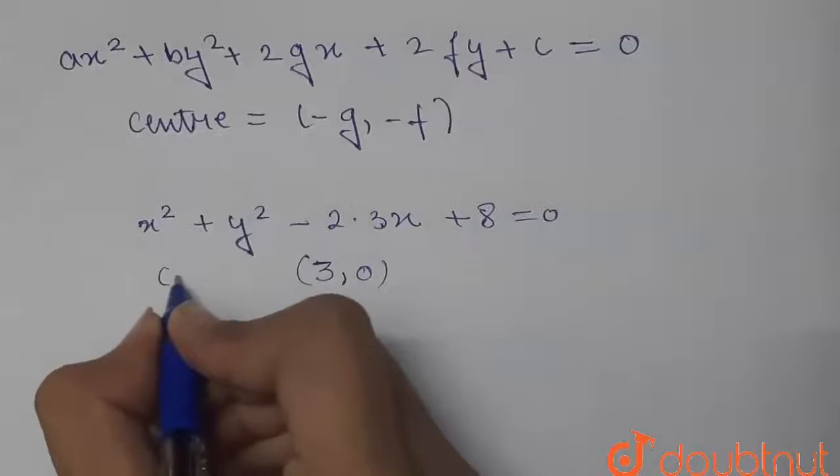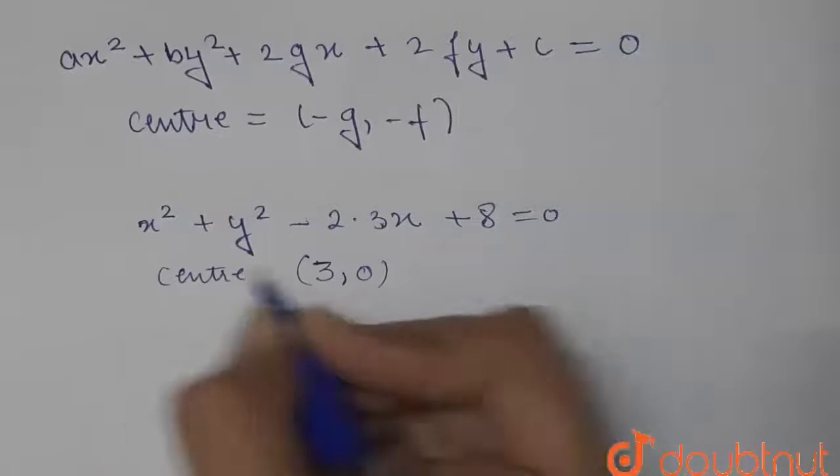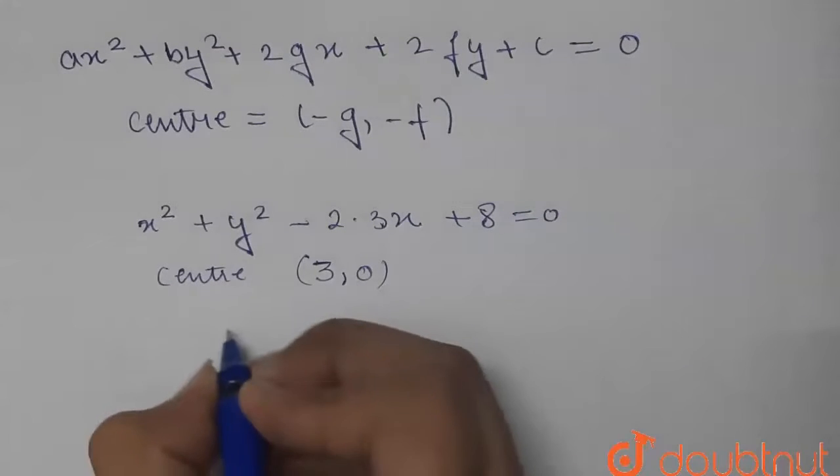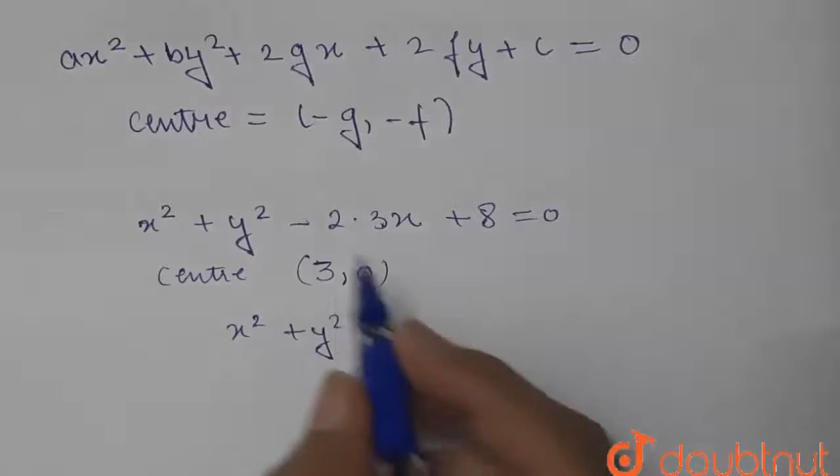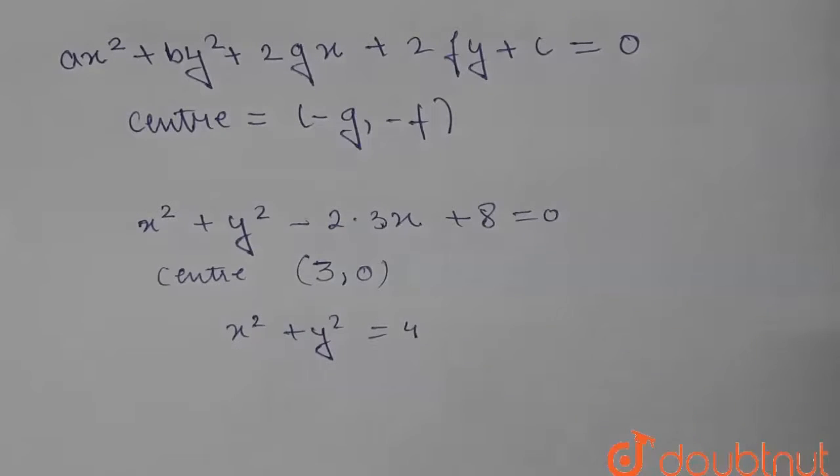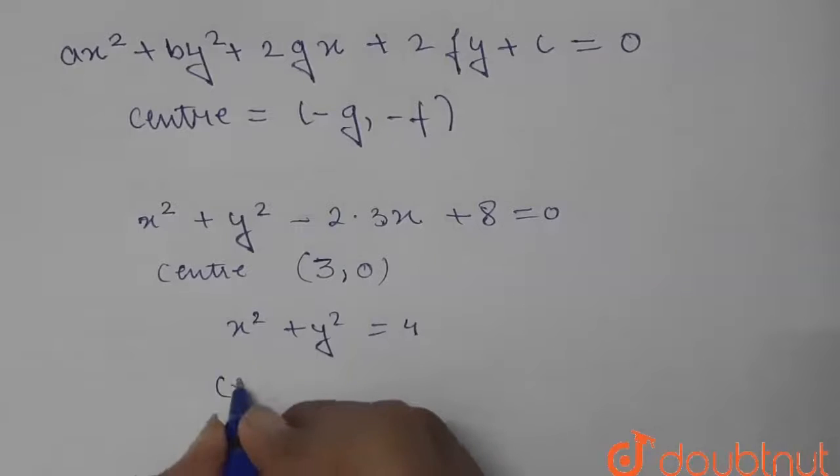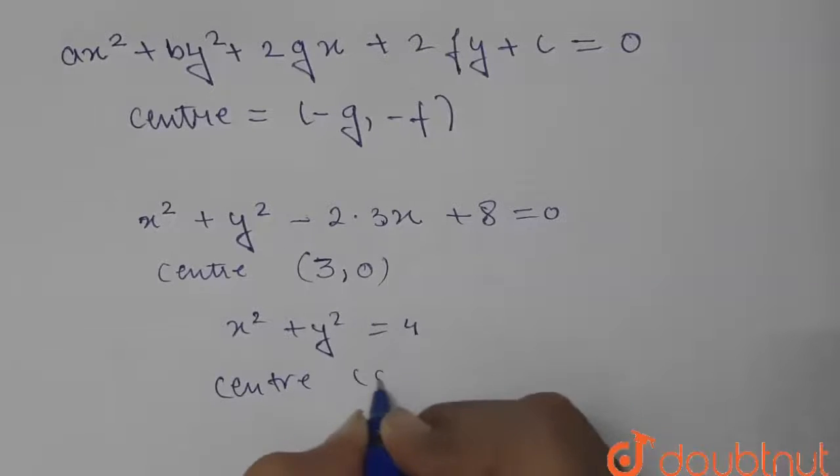Therefore its center we wrote there as (3, 0). Similarly, next equation is x² + y² = 4. Here we are not having g and f, so directly we can write its center will be (0, 0).